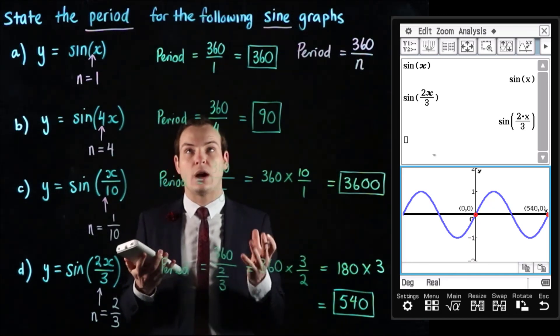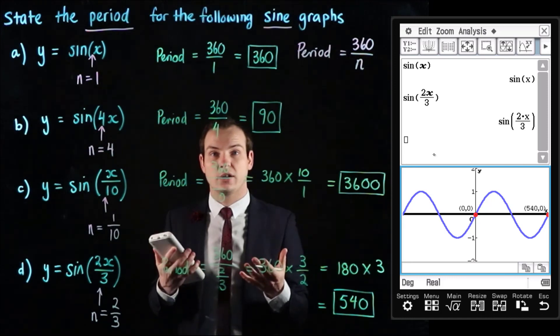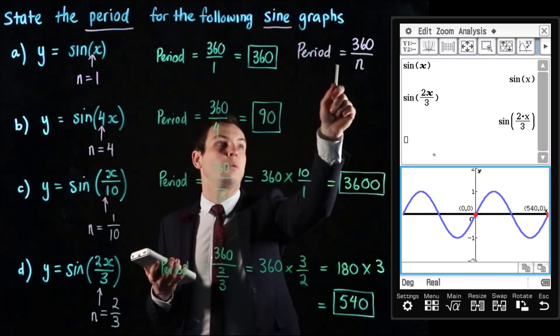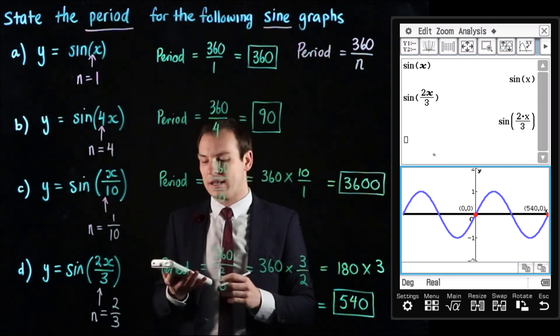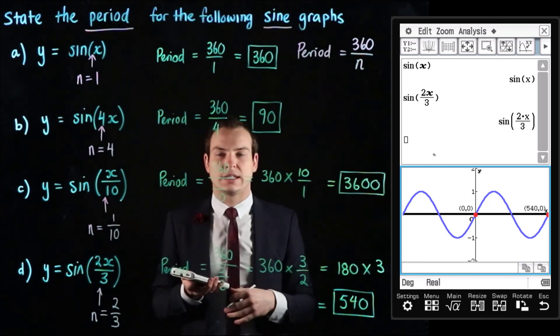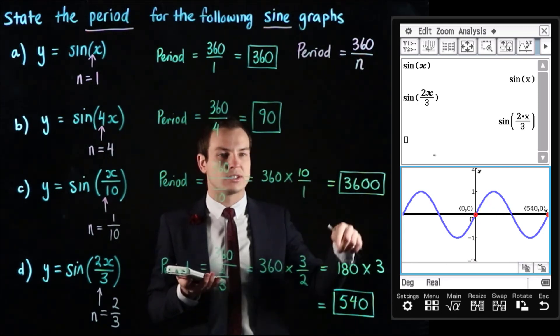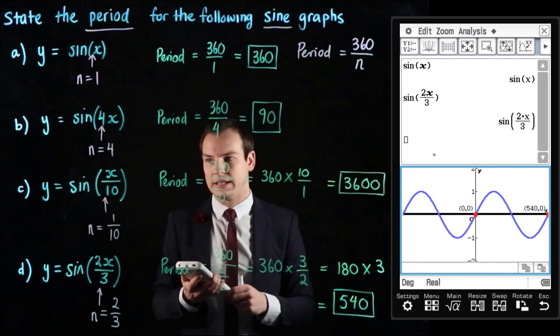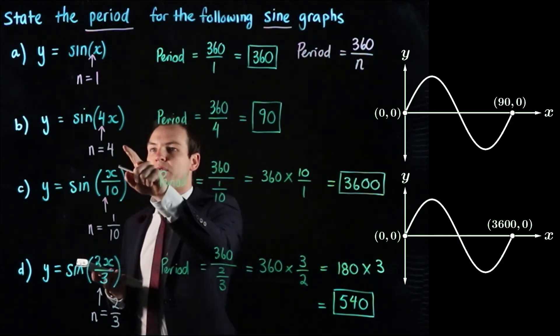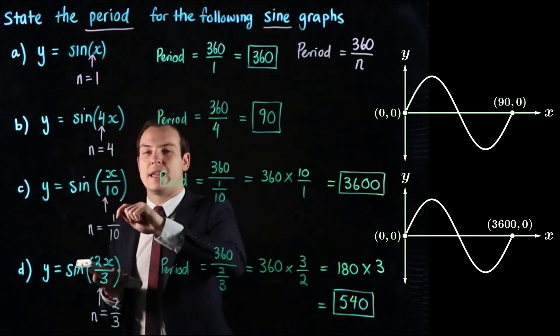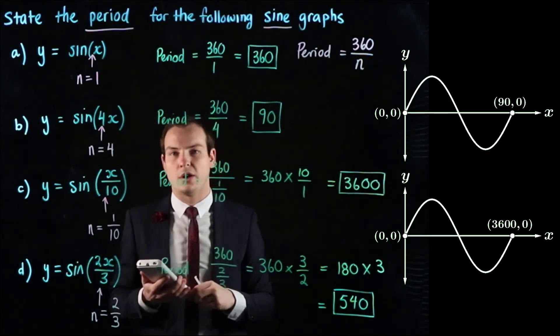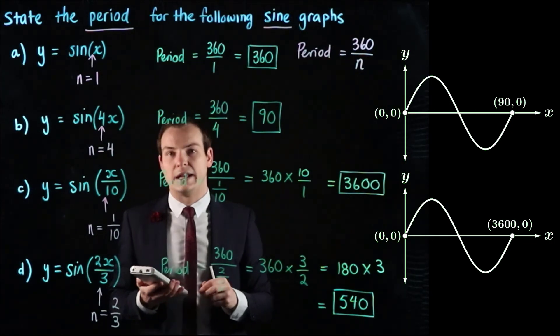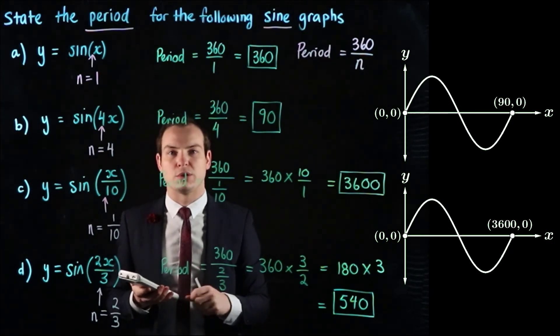So that's how we calculate the period for a sine graph and we use this formula which is 360 over n which is the coefficient of x and that will allow us to calculate how long it takes for one cycle of the graph to be completed. So over to the right I've just put up the graphs of b and c for you to have a quick look at and as always stay tuned for more videos that are going over circular functions and good luck for any questions and problems you're attempting.